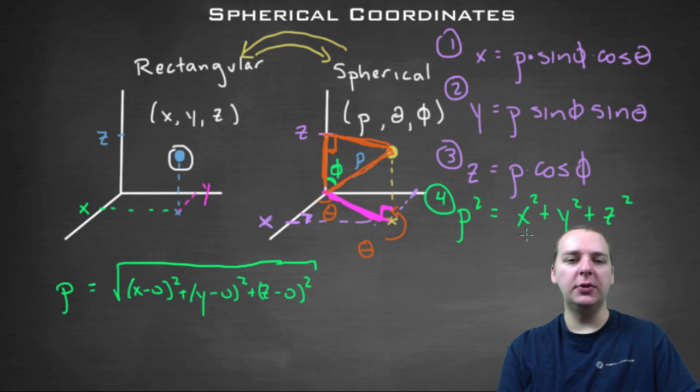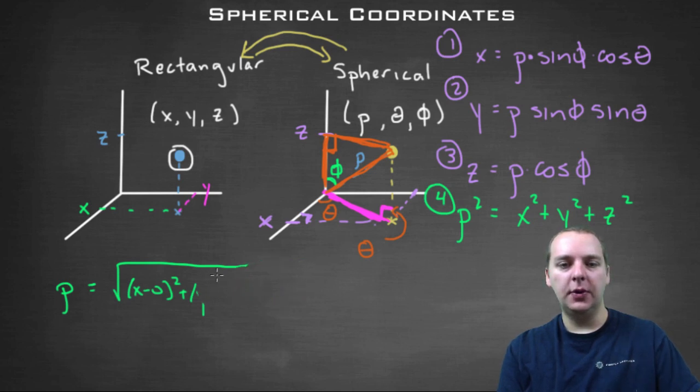Okay, so that's a good way to get rho, is you basically just do the distance formula.